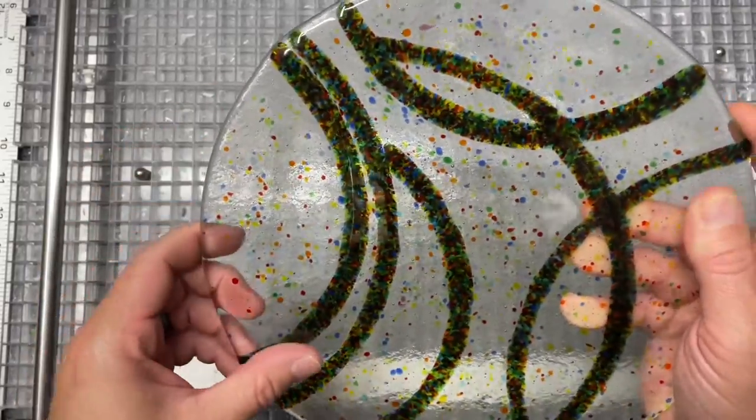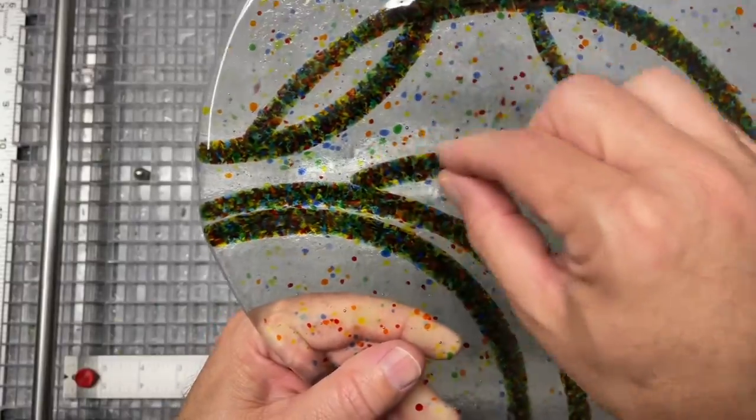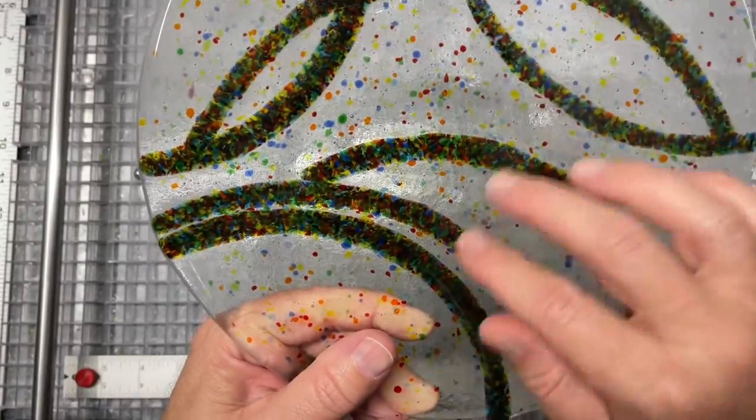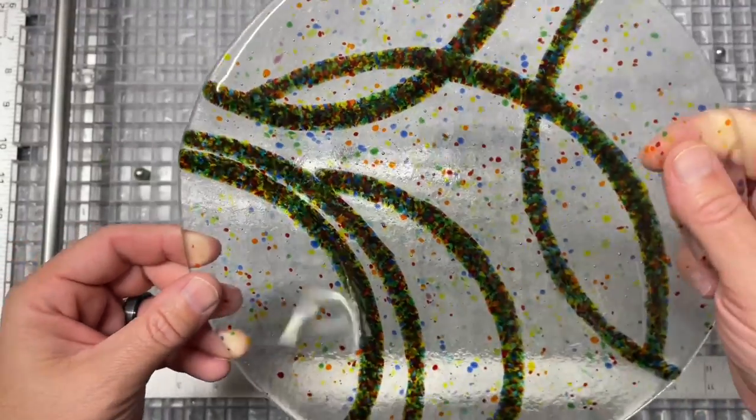Then I'll do a fire polish on that to clean those up, and then I'll slump this one as well. But generally I'm really pleased with this. The rings spread out and thinned out a little bit, and so that allows the transparency of that glass to come through.